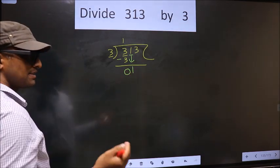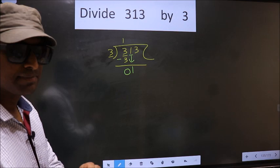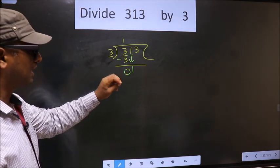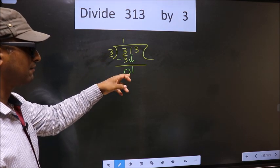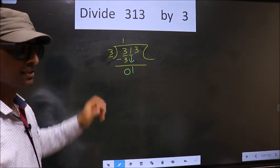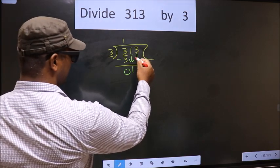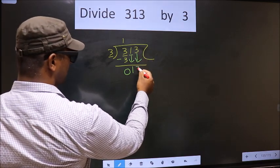This is where the mistake happens. Here we have 1, here 3. 1 is smaller than 3. So what many do is they directly bring down the other number 3 down.